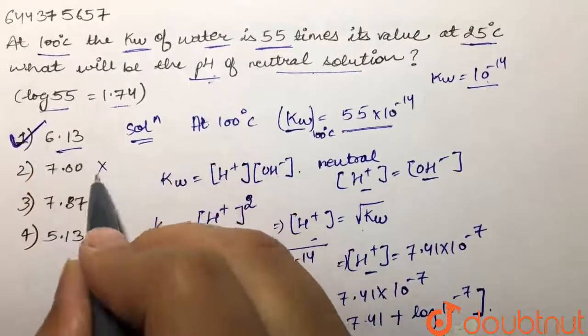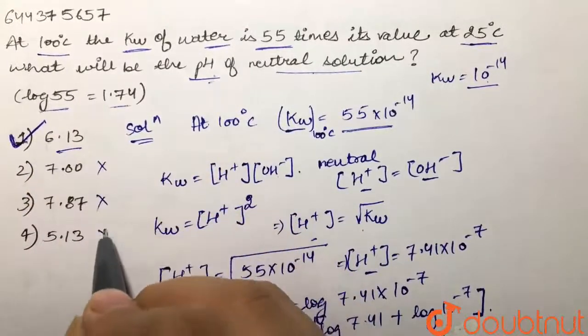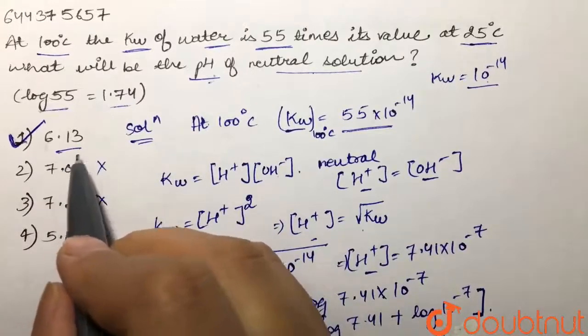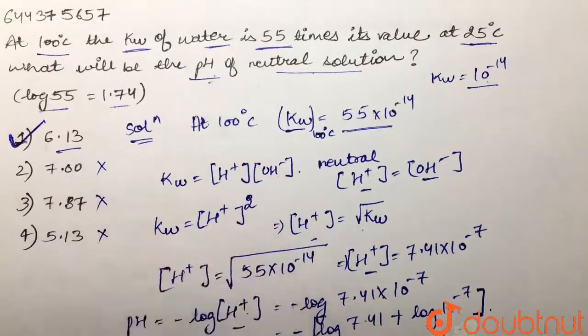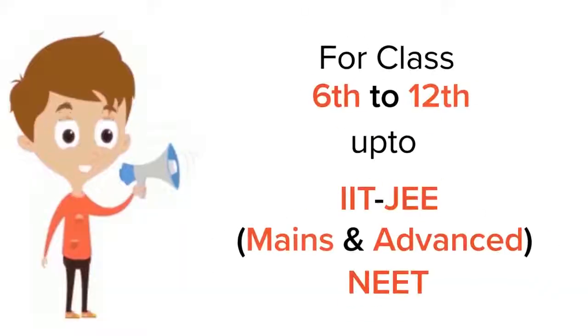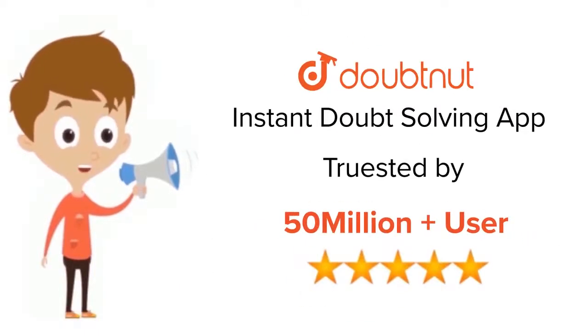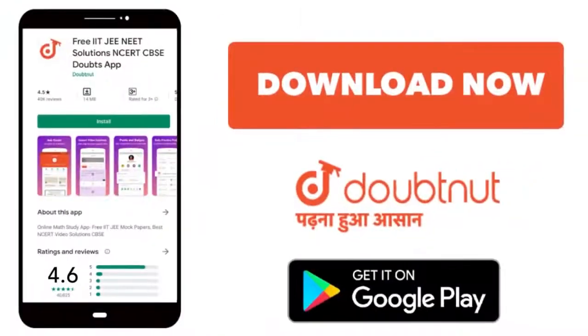We do not get 7, 7.87, or 5.13 — our answer is 6.13, that is option 1. For class 6 to 12, IIT JEE and NEET level, trusted by more than 5 crore students — download DoubtNet today.